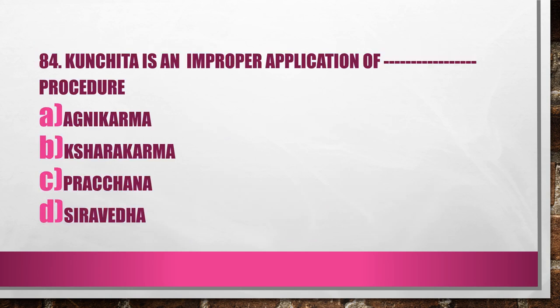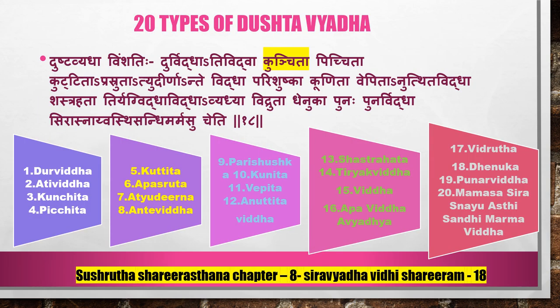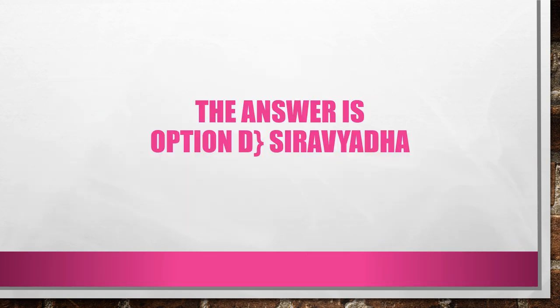Question No. 84. Kunchida is an improper application of which procedure? A. Agni Karma, B. Bikshara Karma, C. Prachana, D. Siravyada. There are 20 types of Dushta Vyada — Durviddha, Adi Viddha, Kunchida, Pichida, Kudida, Abasruda, Adyudherna, Ande Viddha, Parishushka, Kunida, Vepida, Anudida, Viddha, Shastra Hatha, Tiryak Viddha, Abha Viddha, Avyadhyaya, Vidrata, Dhenuka, Punar Viddha, affecting Mamsa, Sira, Snayu, Asthi, Sandhi, Marma. Reference is Susruta Sharirastana Chapter 8, Sira Vyada Vidi Shariram, Slokam 18. Answer is Option D, Sira Vyada.